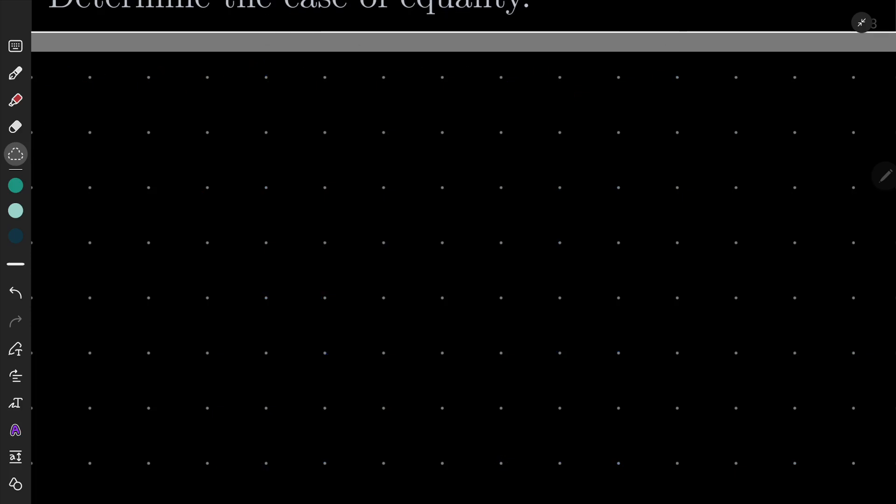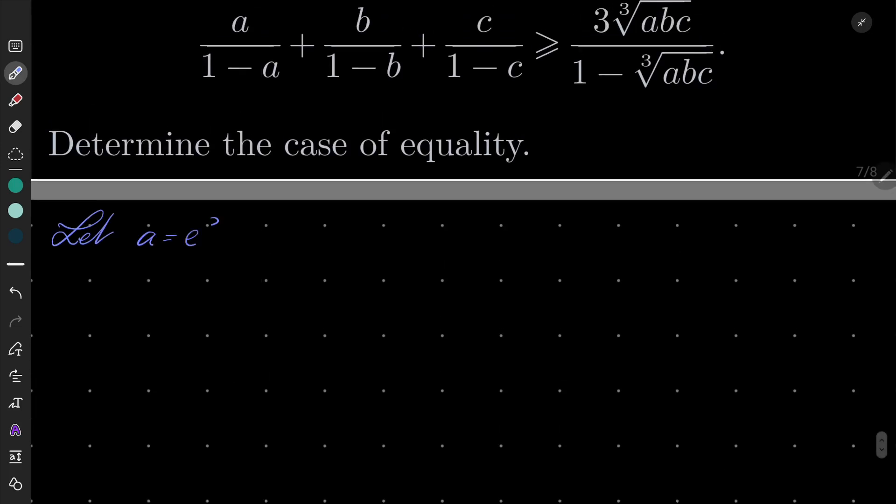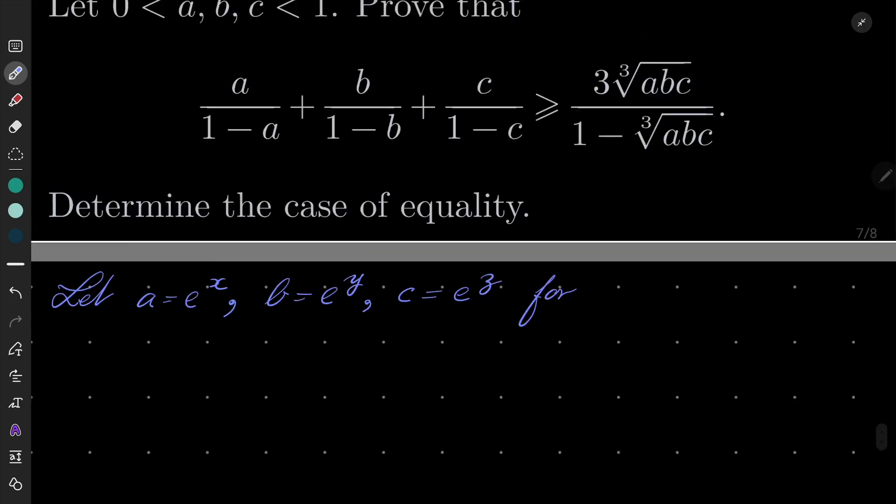Okay, so my solution, as I suggested, let a be equal e to the power of x, b equals e to the power of y, c equals e to the power of z. And let's see, remember that a, b and c are between 0 and 1.